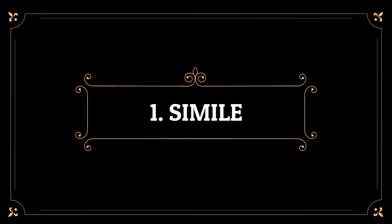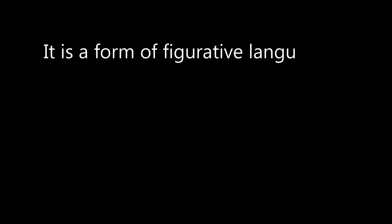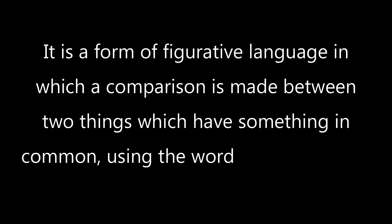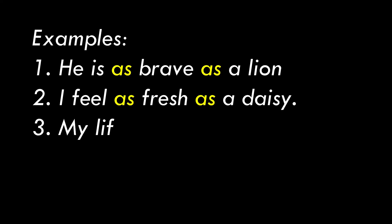The first type is simile. It is a form of figurative language in which a comparison is made between two things which have something in common, using the words 'like' and 'as.' Simile is used to describe an item, situation, emotion, or action by comparing it to something else in order to make the statement more creative and artistic. Let us see some examples of simile.